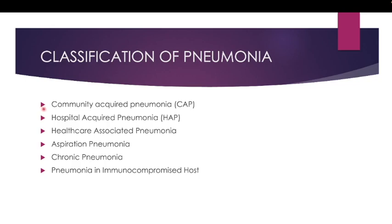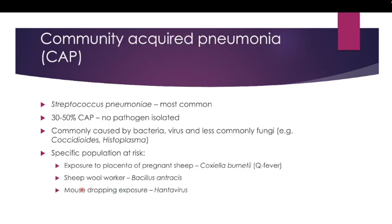Pneumonia can broadly be classified into six subgroups: community acquired pneumonia, hospital acquired pneumonia, healthcare associated pneumonia, aspiration pneumonia, chronic pneumonia, and pneumonia in immunocompromised host.